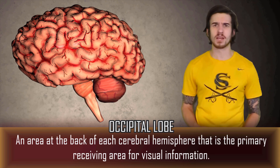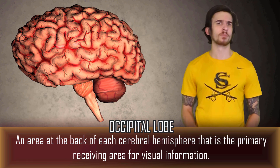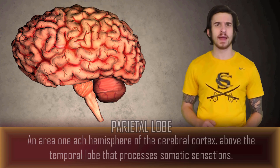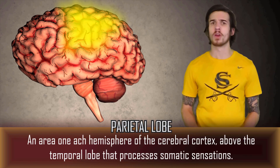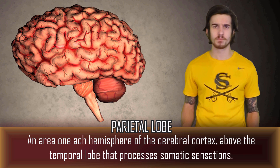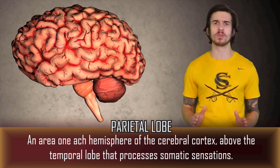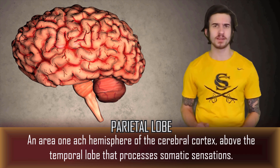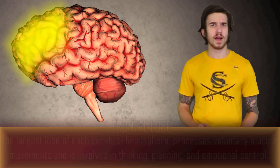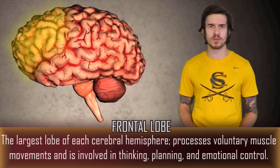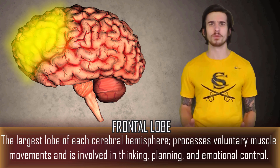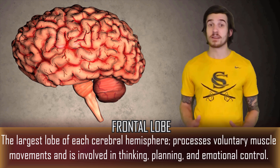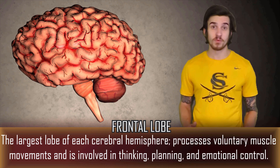Above the occipital and temporal lobe we have our parietal lobe, which processes somatic sensations such as touch, pressure, and even temperature. And for our last lobe, by far the largest in all of the cerebral cortex, the frontal lobe. The frontal lobe processes voluntary muscle movements and is in charge of thinking, planning, and emotional control.